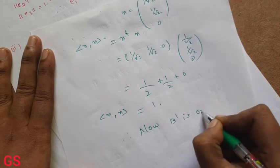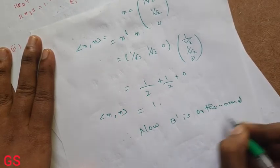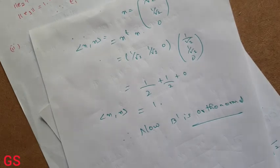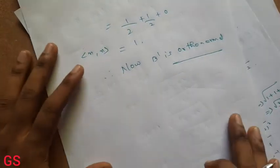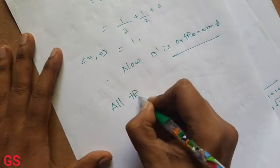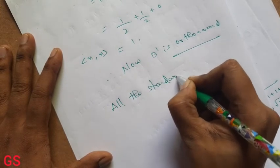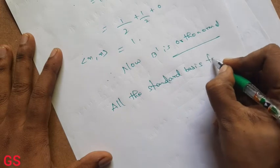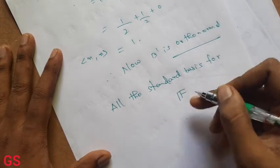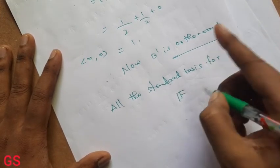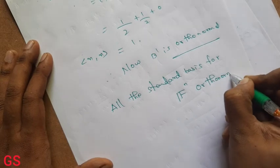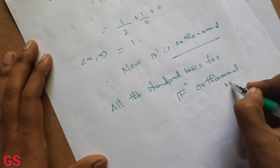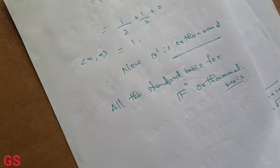B dash is orthonormal. So this is orthonormal. All the standard basis — in general you can write F, it can be C or R. The standard basis for the standard basis is orthonormal. Orthonormal basis is orthonormal basis. So this is orthonormal basis.